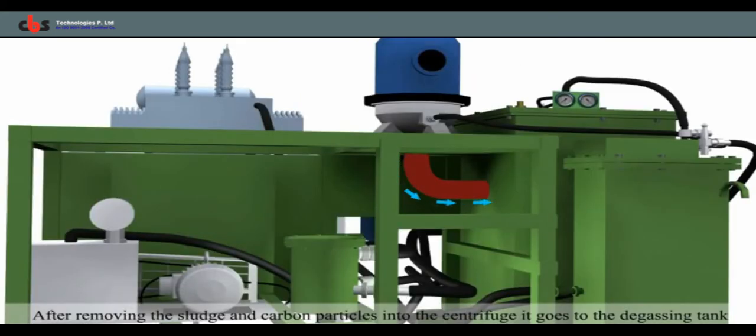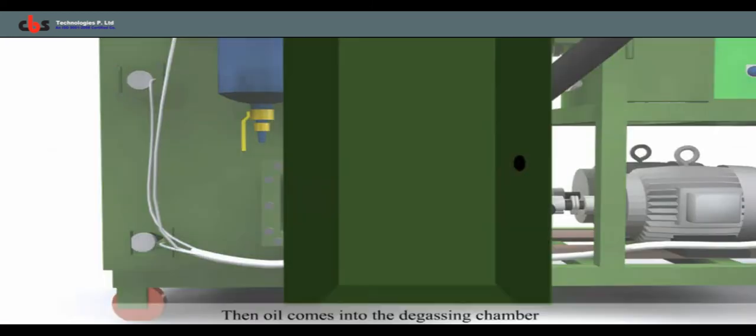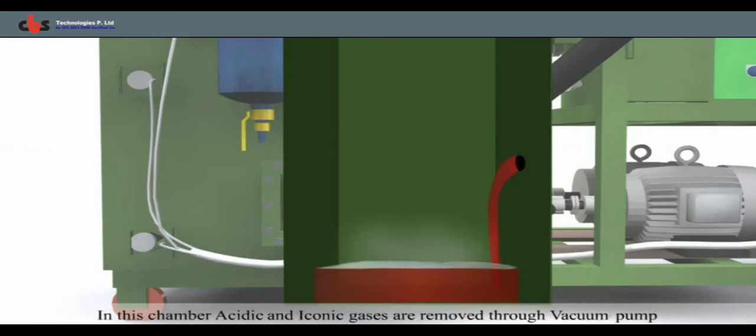After removing the sludge and carbon particles in the centrifuge, it goes to the degassing tank. In degassing chamber, emulsified water and acidic and ionic gases are removed through vacuum pump.